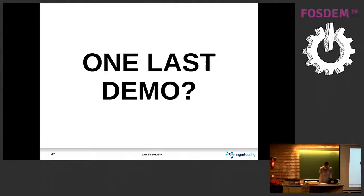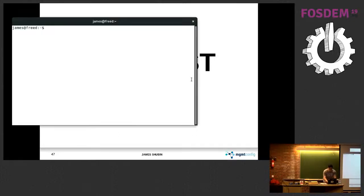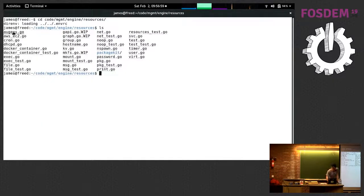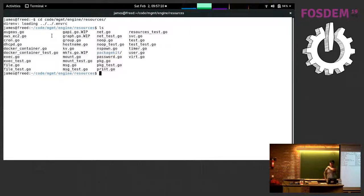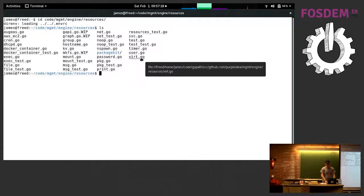How easy is it to extend with new resources? That's a great question. We have a resource API — there are basically four or five functions you have to implement. You can write a whole resource in about 200 lines of Golang code. There are almost 20 resources so far: augeas, EC2, a cron resource, a docker container resource, exec, file, nspawn, print, virtual machine, user group, and so on. The work to actually set state is in one function, and the event part is in a function called watch — a main loop that runs and detects when state changes by whatever mechanism you like. Very easy to write a resource — I've trained contributors from knowing nothing about the API to being proficient in a day or a few weeks depending on complexity.